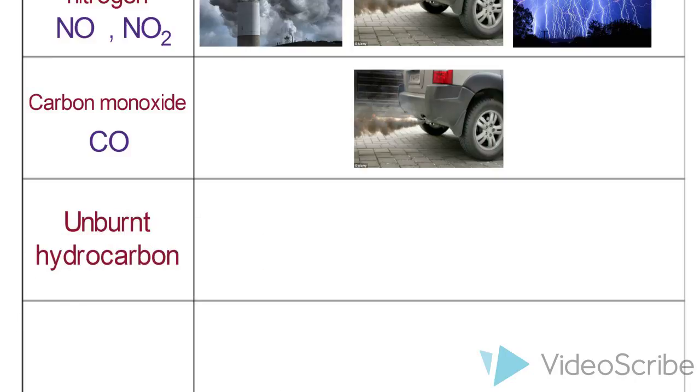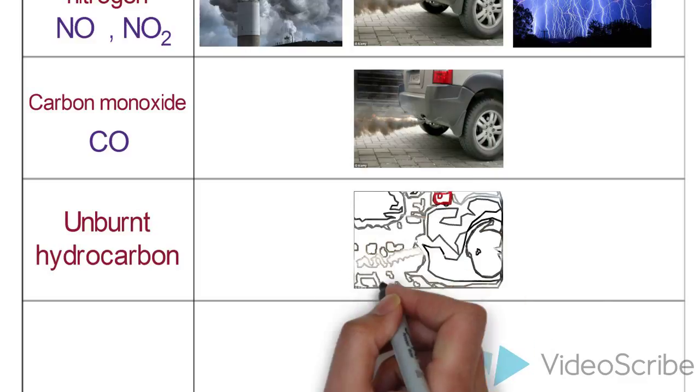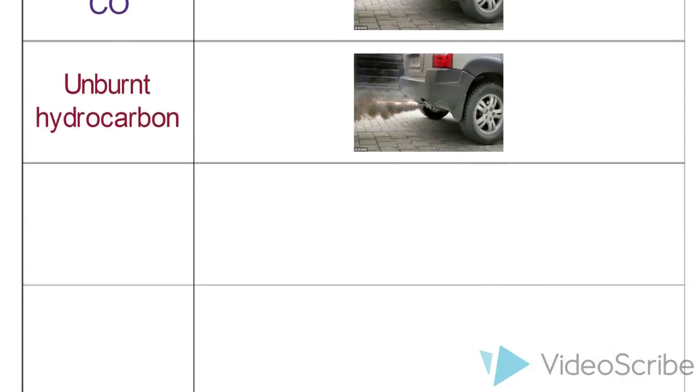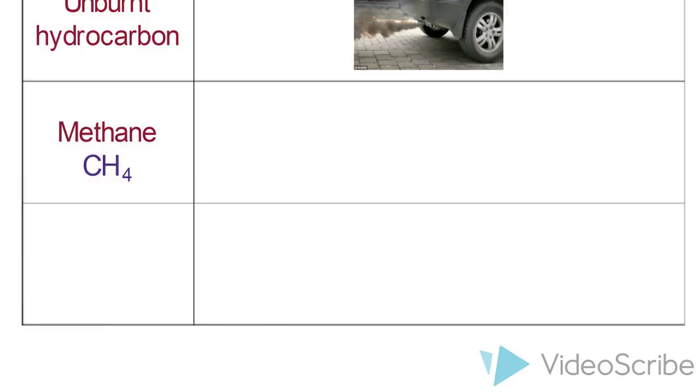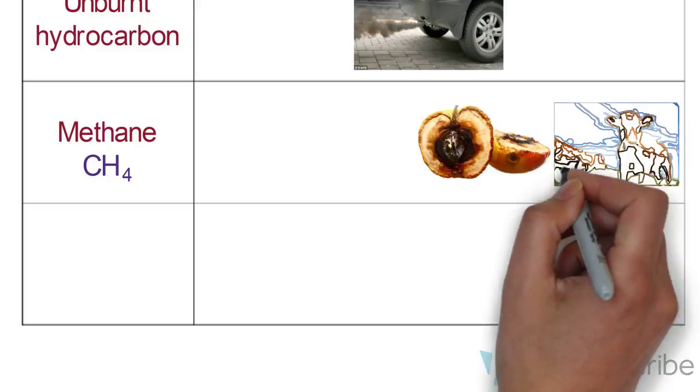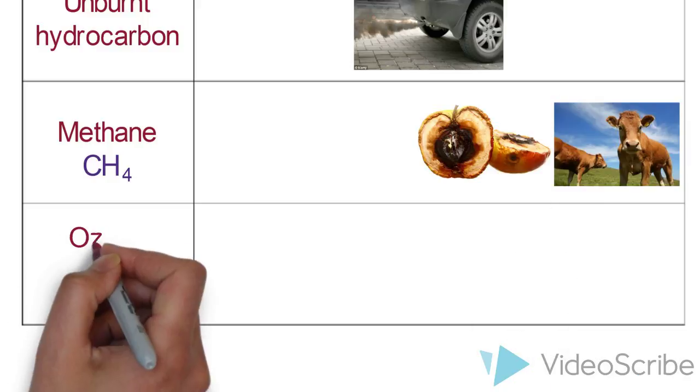The fourth air pollutant is unburnt hydrocarbons, which comes mainly from hydrocarbons in fuels that have not been burnt in vehicle engines. Next, there is methane, which is produced when plant and animal decay as well as from cow and other farm animals. Last but not least, there is ozone. Ozone is a type of oxygen which is formed when sunlight acts on the other air pollutants such as nitrogen dioxide,